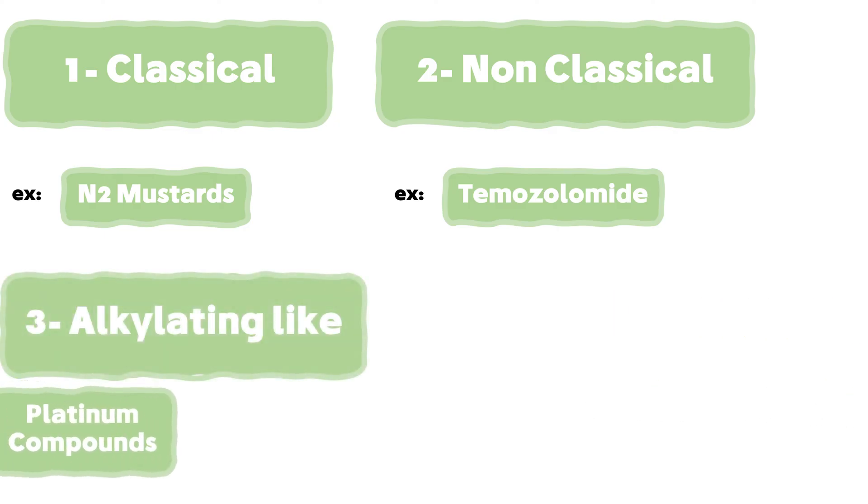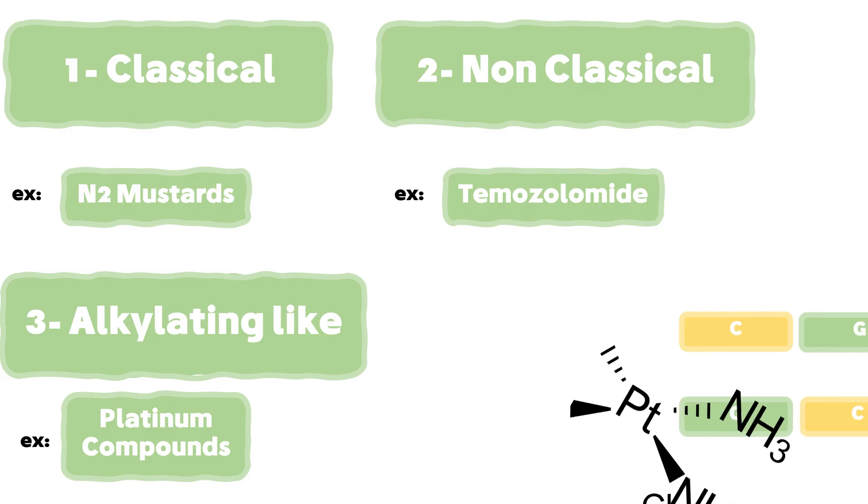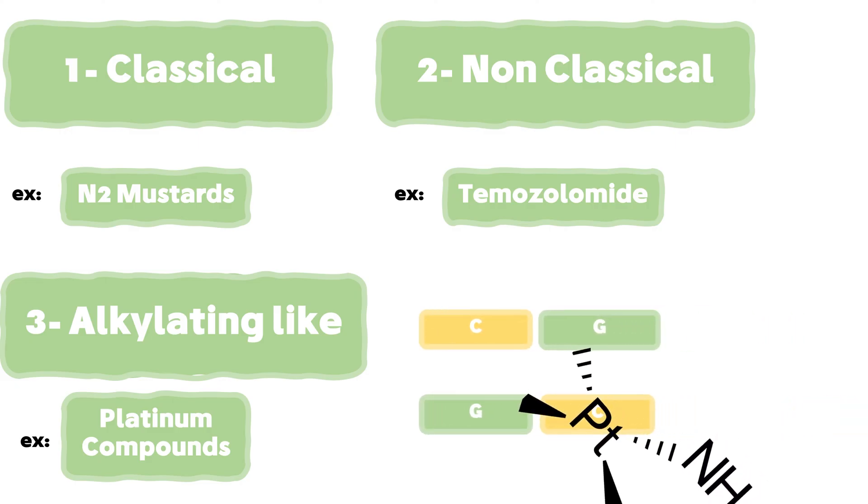The third type is the alkylating-like agents. This class contains a platinum element that performs the same binding and crosslinking action of classical agents, instead of having a carbon-based alkyl group.